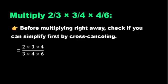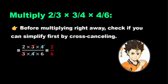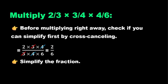Before multiplying straight across, check if you can simplify first by cross-canceling. With 2/3 by 3/4 by 4/6, now you can cross out that 3 and